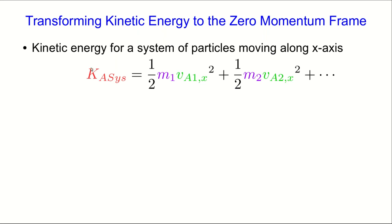So we start with the kinetic energy for our system as measured in our arbitrary frame A. And now we do a Galilean transform on all of these velocity components.